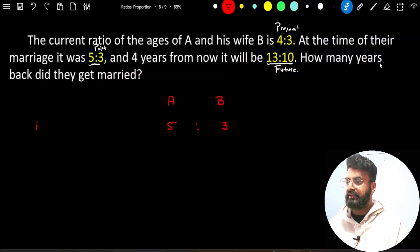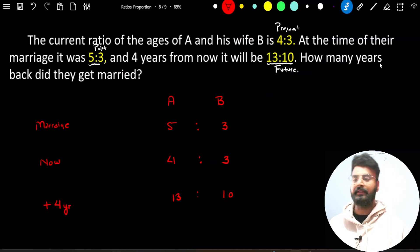Let me first write down 5:3 which is the ratio for at the time of their marriage, and then I will write down the ratio for present which happens to be 4:3. And then the last ratio 13:10, which is for 4 years hence from present.